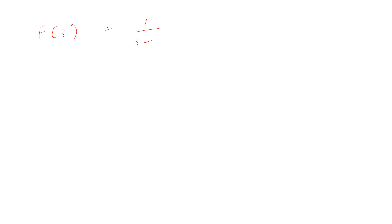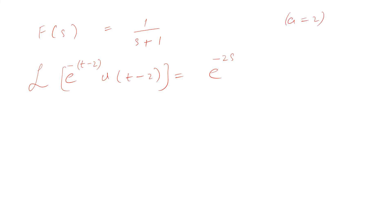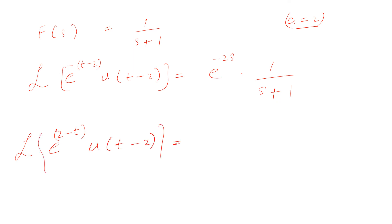Therefore, the Laplace transform of e^(-(t-2))·u(t-2) is e^(-2s) × F(s) = e^(-2s)/(s+1), since a=2. So the final answer for the Laplace transform of e^(2-t)·u(t-2) is e^(-2s)/(s+1). That's all for now, thank you guys.